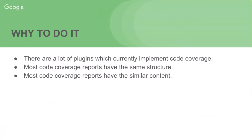The second reason is most code coverage reporters have the same structure — they can all be parsed by our tool. For example, for Java code coverage, most reports have a structure like package, class, file, and method. Each node can be viewed as a package, class, or method, and there are also child nodes like class of a package or method of a class. So most coverage reports have the same structure that can be viewed as a tree.